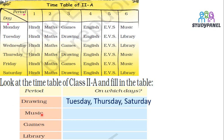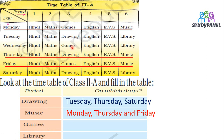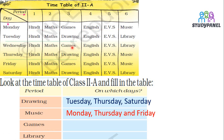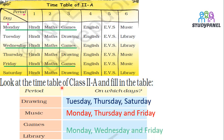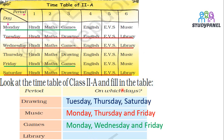Now come to Games. Games are on Monday, Wednesday, and Friday — so we write Monday, Wednesday, and Friday. Now come to Library. Library is on Tuesday, Wednesday, and Saturday — so we write Tuesday, Wednesday, and Saturday.